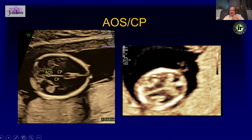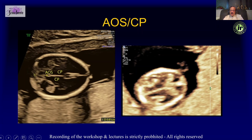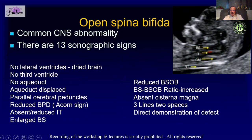When you go one step down from the BPD plane, you can see the cerebral peduncles and the aqueduct of Sylvius. We can measure the distance between the aqueduct of Sylvius and the occipital bone. In spina bifida, you see parallel cerebral peduncles and the aqueduct of Sylvius is pushed toward or moves toward the occiput, or it can become obliterated.